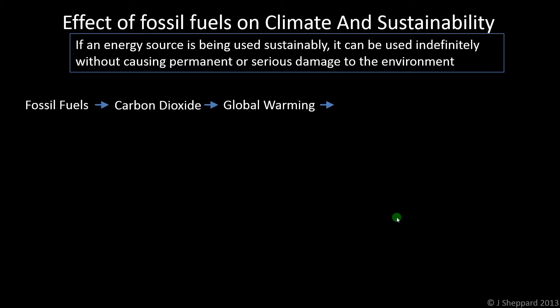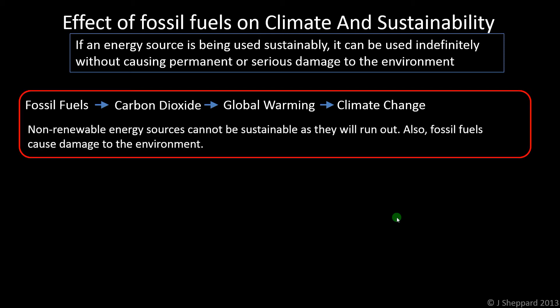Let's look at three examples. If we're talking about fossil fuels, when we burn fossil fuels that releases carbon dioxide — it's fairly well established now that this will lead to global warming and climate change. So that's obviously a non-sustainable approach for two reasons: firstly, fossil fuels will run out, so we can't keep using them forever; and also it's going to cause damage to the environment, so the environmental consequences would possibly be too severe for us to keep going.